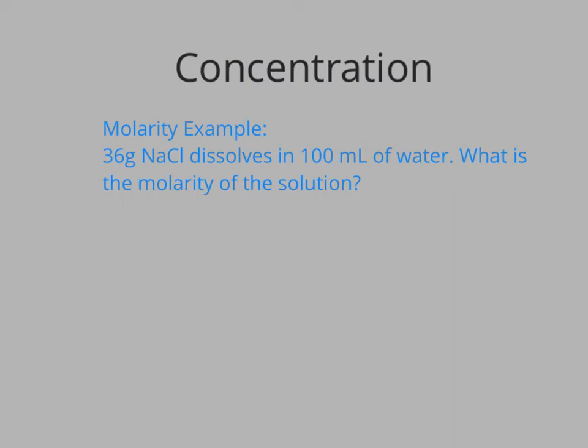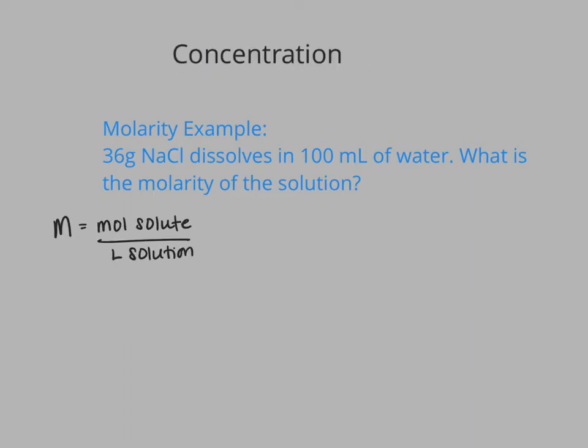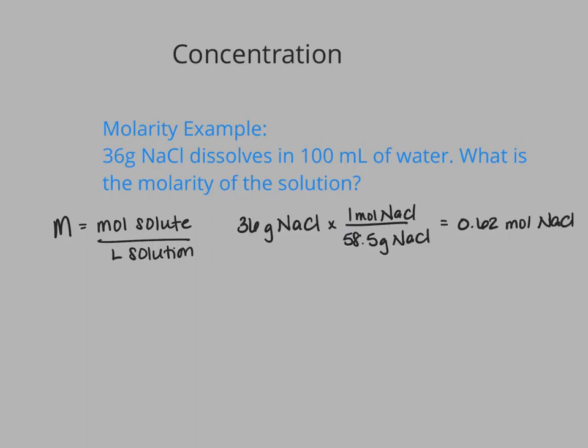Let's take a look at an example of how to calculate molarity. I have 36 grams of sodium chloride dissolved in 100 milliliters of water. What is going to be the final molarity of the solution? Our molarity is moles of solute over liters of solution, so let's take it one step at a time. First, we need to find our moles of solute. Our solute in this case is our sodium chloride, or salt. So I need to convert from grams to moles using the molar mass of sodium chloride. I find that 36 grams of sodium chloride is 0.62 moles of sodium chloride.